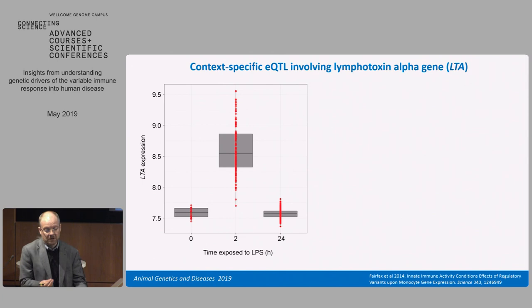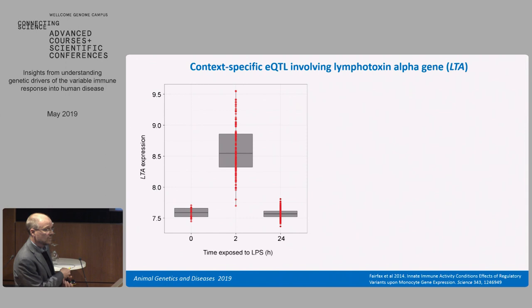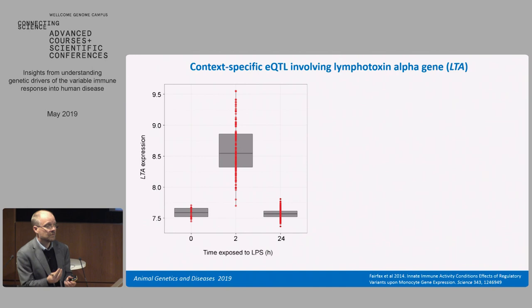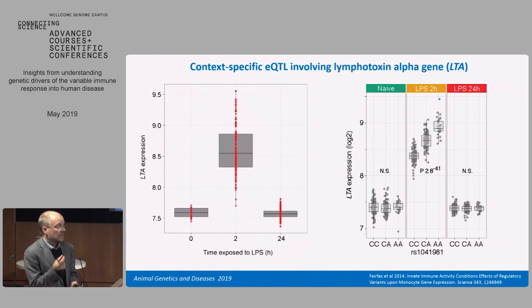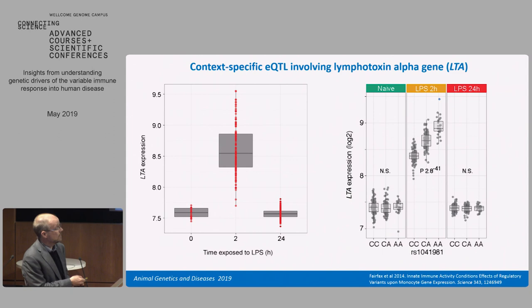If you think about everyone in this room in terms of their expression of lymphotoxin alpha — an important early cytokine — in the resting state things are pretty tight with not very much variation between individuals. But once we've stimulated the cells with LPS for two hours there's a very broad range in terms of responsiveness as healthy people to that challenge, and then that level of expression drops right back down at 24 hours. When you look at lymphotoxin alpha in the resting state there's no evidence of an eQTL. It's only after induction with LPS for two hours that we see the eQTL — highly significant, p-value to the power of minus 41 — that then drops back down at 24 hours.